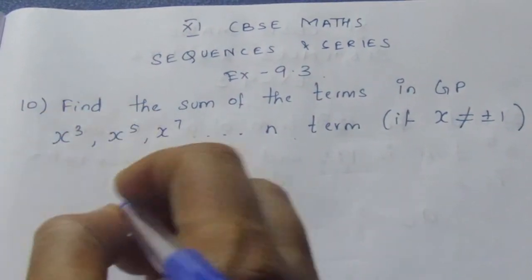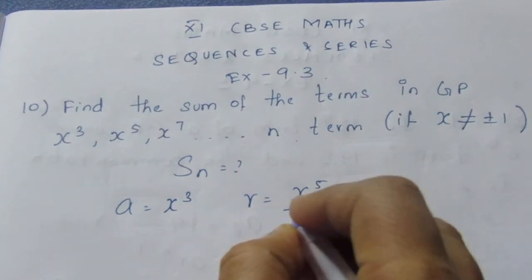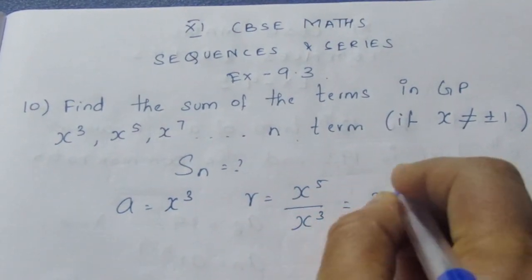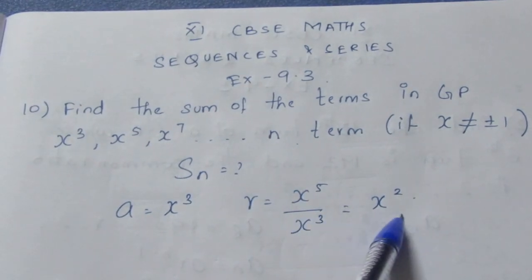Here we know A is x to the power 3. R equals the second term by the first term, which is x squared. As it is division, we need to subtract the powers. It becomes x to the power 2.